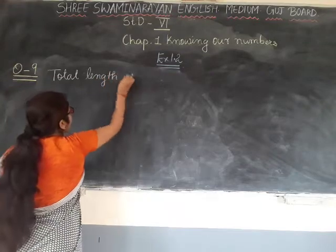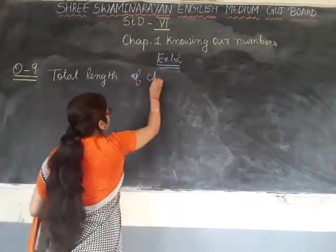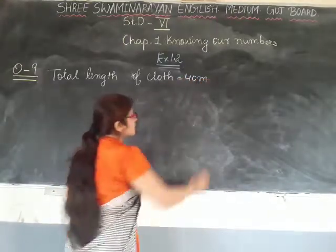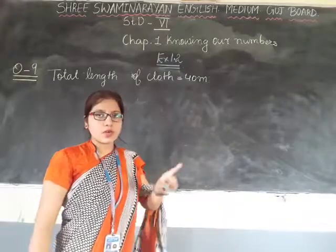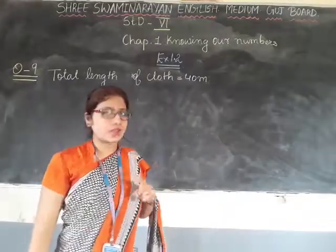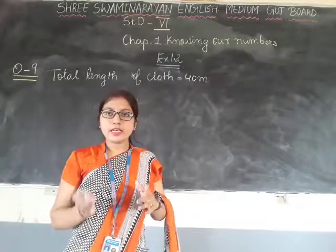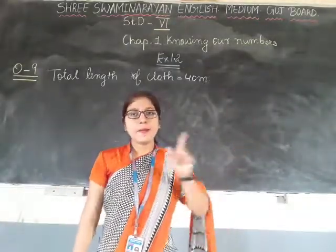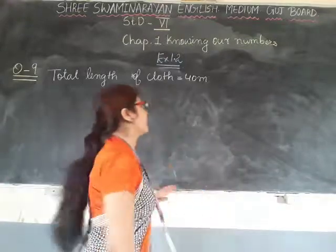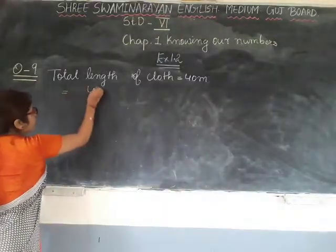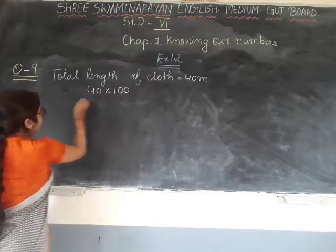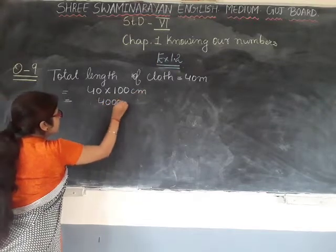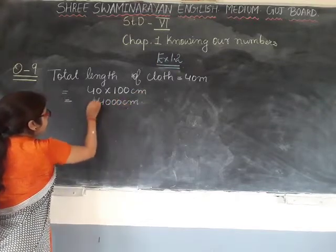Total length of cloth — in the question it is given as 40 meters. This we have to convert into centimeters, because in the question it is given. One meter equals 100 centimeters. So to convert meters into centimeters, we multiply by 100. That means 40 into 100 centimeters. So your answer will be 4000 centimeters.